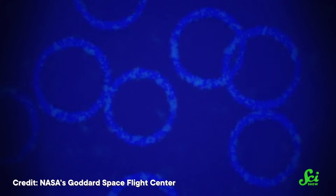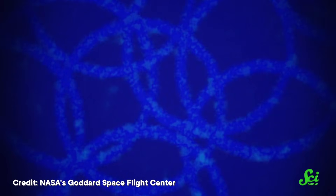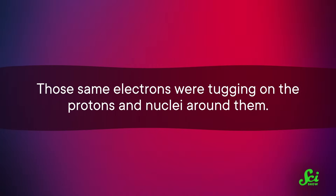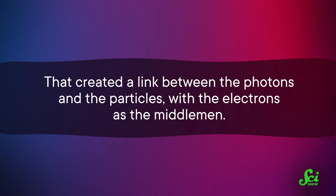Back then, there were particles of light called photons and a mishmash of subatomic particles including protons, neutrons, and electrons. Within just a few seconds, some protons and neutrons joined together to form atomic nuclei. But it was too hot for electrons to settle into atoms, so they stayed loose. As they whizzed around, they scattered photons like pinballs, making it impossible for light to get anywhere. Those same electrons were tugging on protons and nuclei around them, creating a link between photons and particles, with electrons as middlemen. The whole mix flowed together like a single fluid, but within that fluid there were competing forces.